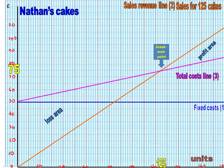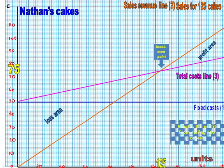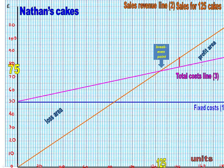Now we can use this chart to work out how much the profits and losses are, using the numbers we worked on in class. So if I ask: what's the profit from selling 140 cakes? Well, it's definitely a profit because it's above the break-even of 125. What we do is find 140 on the x-axis, and you see those two lines — the revenue line and the cost line — and you draw a line that goes between those two points, because the difference between revenue and cost is profit.